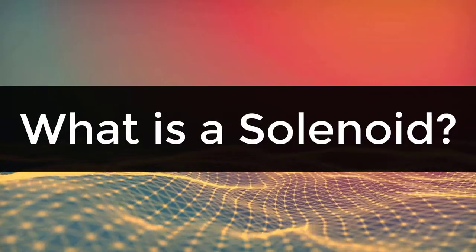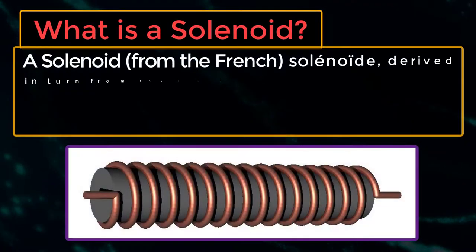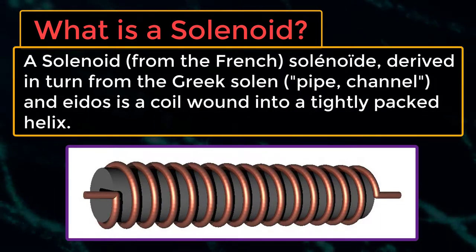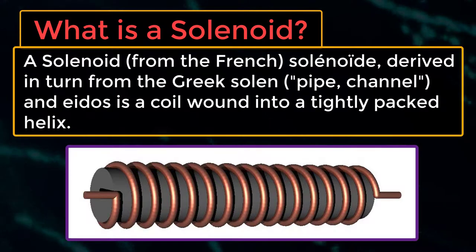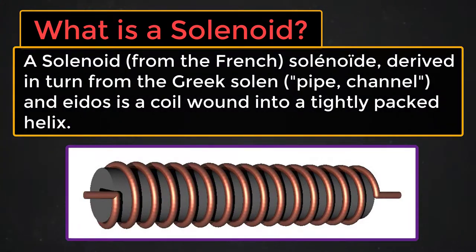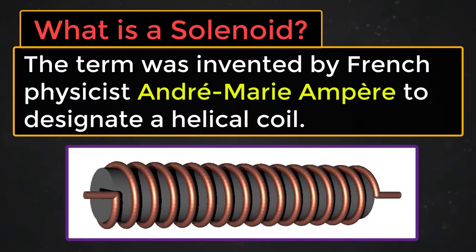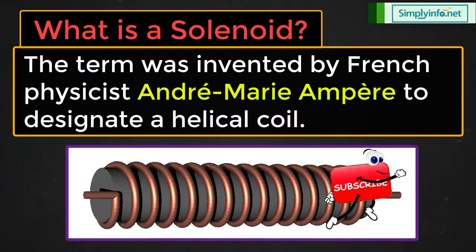What is a solenoid? A solenoid, from the French 'solenoid' derived in turn from the Greek 'solen' meaning pipe channel, and 'eidos', is a coil wound into a tightly packed helix. The term was invented by French physicist André-Marie Ampère to designate a helical coil.